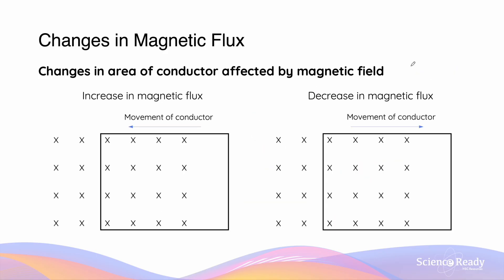The third factor that determines the magnetic flux is the area. On the left-hand side, we have a rectangular conductor moving towards a uniform magnetic field. As the conductor moves into the field, the area of the conductor actually affected by the magnetic field is increasing, so the amount of magnetic flux is also going to increase. Vice versa, if we move the rectangular coil out of and away from the uniform magnetic field, the affected area will effectively decrease, giving us a reduced amount of flux passing through the conductor.